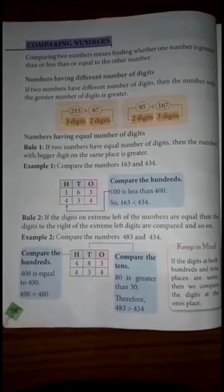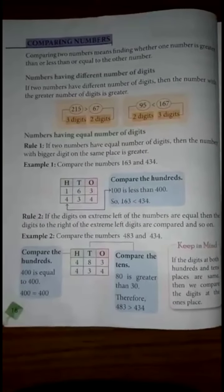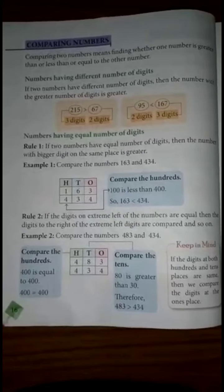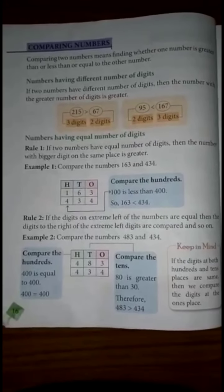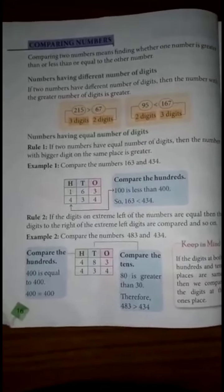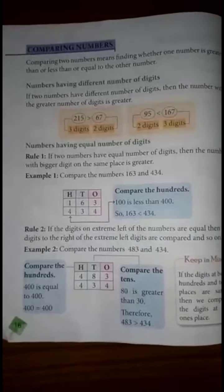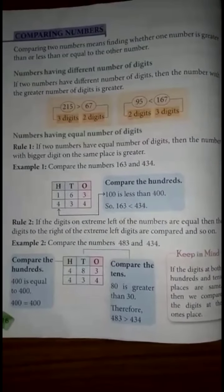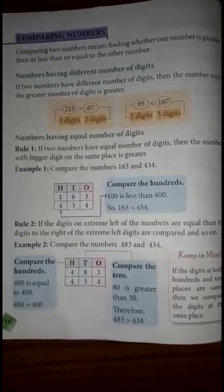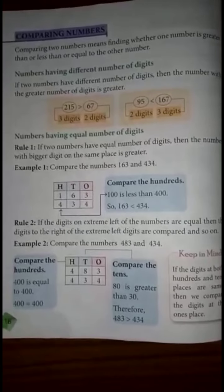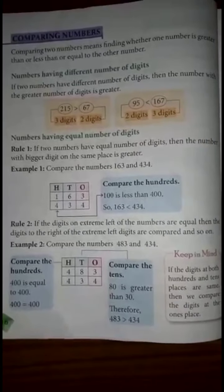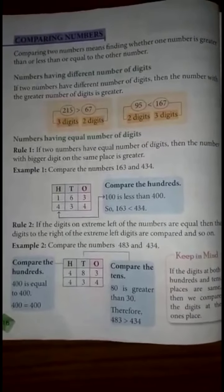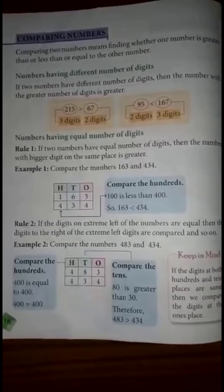This is the second rule: if the digits on the extreme left of two numbers are equal, then the next digit to the right is compared, and so on. We compare numbers from the left side going right, place by place. Now let's compare 483 and 434.